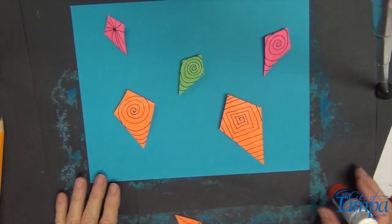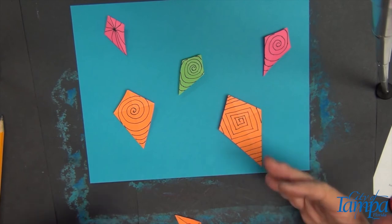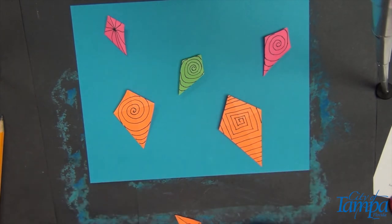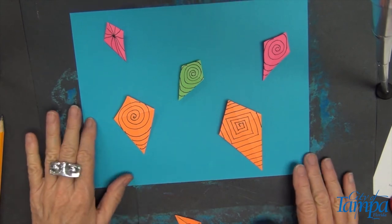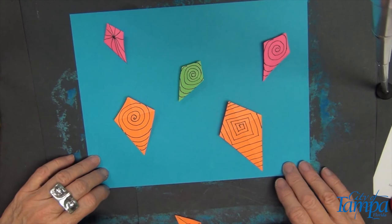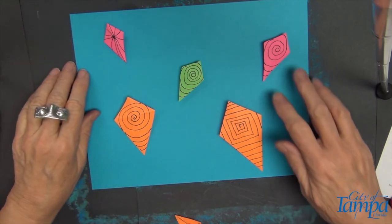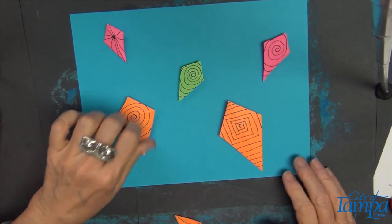As we lay our kites down, I want you to be thinking about foreground and background. Things that are larger are going to be in the foreground. And as they start to go away from us, they get smaller. So we want our larger kites to be closer to this edge, and our smaller kites need to be closer to the top, indicating that those are further away from us.